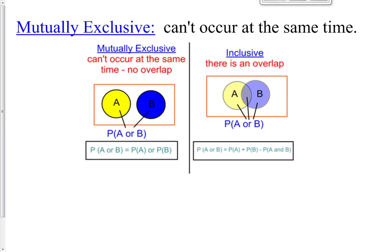Mutually exclusive means that it's an event that cannot occur at the exact same time. An example of this: what's the probability of picking a male in my classroom? You would put the males in one bubble and the females in the next circle, and there's no possible way you could be both. In our classroom, there are no male and female students that occur at the exact same time, so you're one or the other.